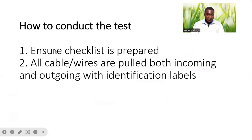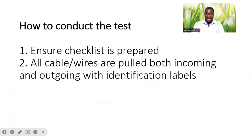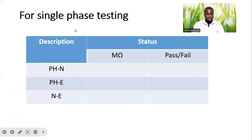How to conduct a test: we have to ensure that we get our checklist prepared. All cables or wires are pulled, both incoming and outgoing, with identification labels — this is very important. For single phase, the checklist will have descriptions: phase-neutral, phase-earth, and neutral-earth. We will measure in megaohms and then record the status, either pass or fail.